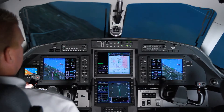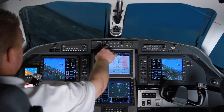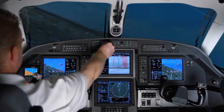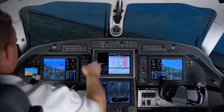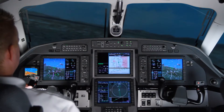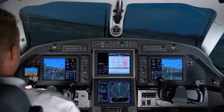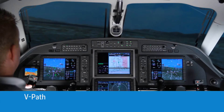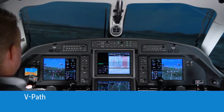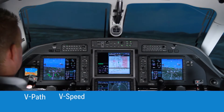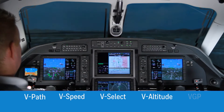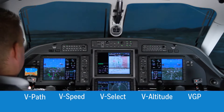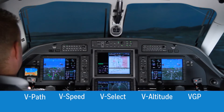When the FMS coupled VNAV option is installed on the aircraft, the FMS supports five VNAV modes: V-Path, V-Speed, V-Select, V-Altitude, and VGP or Vertical Glide Path mode.